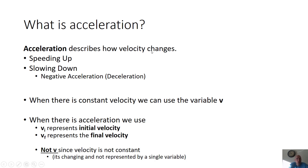Acceleration describes how velocity changes. You can speed up, slow down — which we call deceleration, meaning negative acceleration — or in a future unit you'll see you can change directions. Since velocity is a vector, changing direction also counts as acceleration. When there's constant velocity, we use V and the equation V = X/T. If I ask for acceleration when you have constant velocity, the answer is zero.